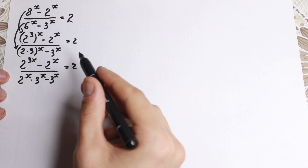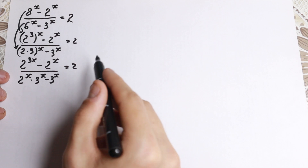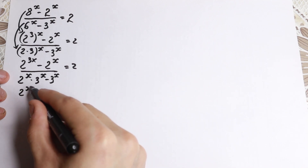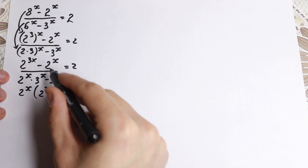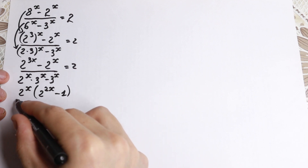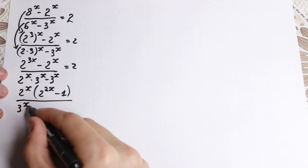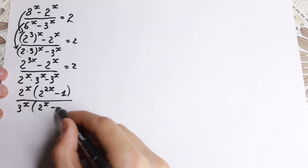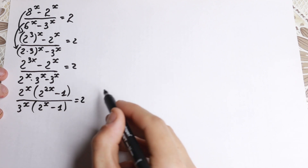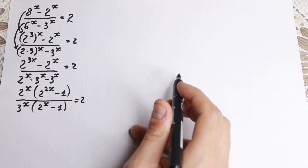Right now, if you look here, we have 2 to the power 3x, which looks like 2 to the x cubed. So we can factor out one 2 to the x. In parentheses we still have 2 to the power 2x, and minus 1. We factor it all over. In the denominator, we factor out 3 to the x, and we will have 2 to the x minus 1 in parentheses. We just factor 2 to the x from the numerator and 3 to the x from the denominator.